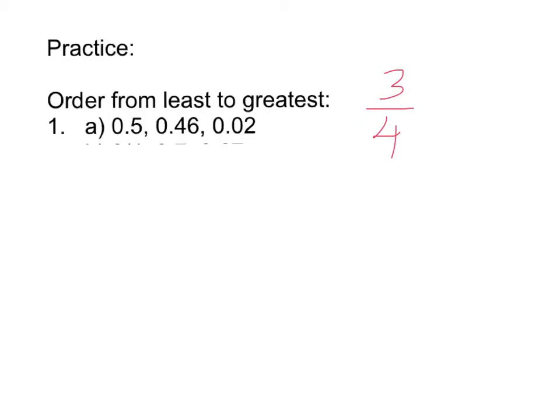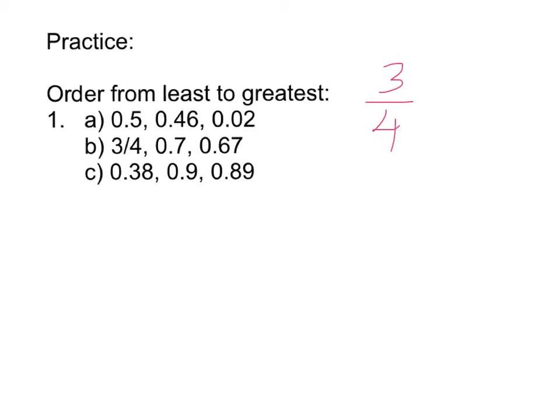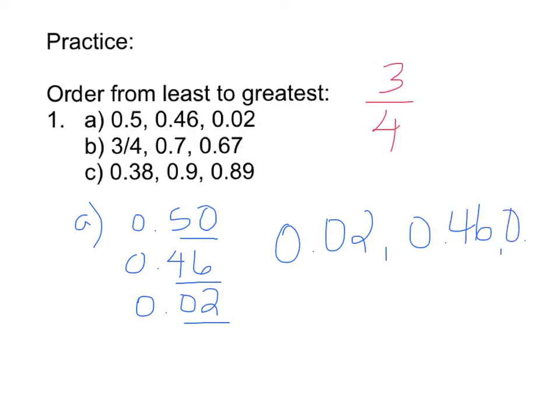All right, so let's take a look. A, we had 0.5, 0.46, and 0.02. Now I'm going to use equivalent decimals. I'm going to add a 0 on there and now I can quickly compare. Is 50 more, is 46 more, or is 2 more? Well, that would mean that 0.02 is the least, 0.46 is next, and 0.5 is greatest. Because adding that 0, we can easily compare 50 to 46 to 2.